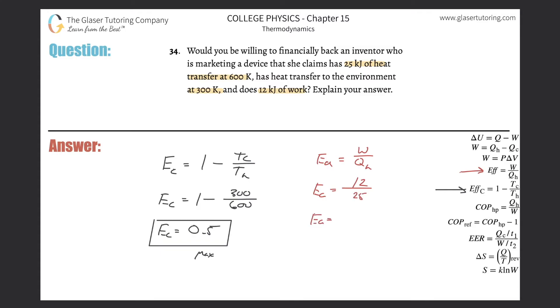Let's do now the actual efficiency. So the actual efficiency is 12 divided by 25, so there's about 0.48. So there's 0.48.